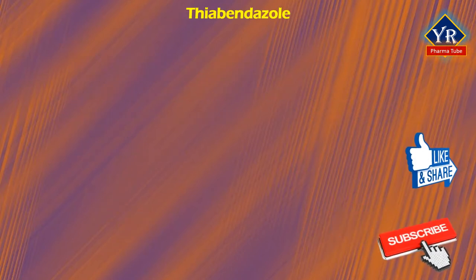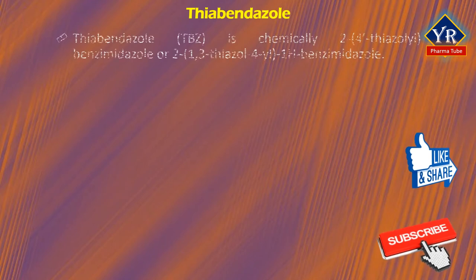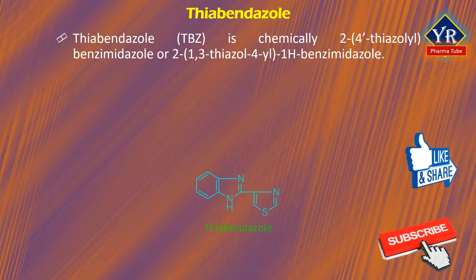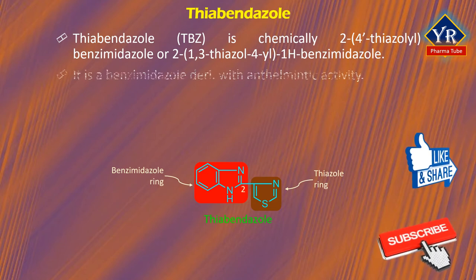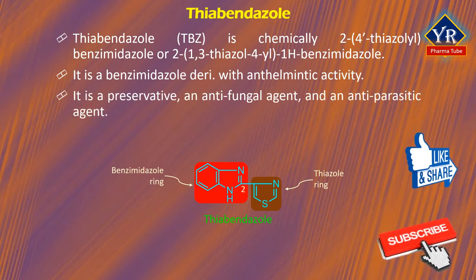The next drug is thiobendazole. Thiobendazole, abbreviated TBZ, is chemically known as 2-(4-thiazolyl)benzimidazole or 2-(1,3-thiazol-4-yl)-1H-benzimidazole. It is a benzimidazole derivative with anthelmintic property. It is a preservative, an antifungal agent, and an antiparasitic agent.